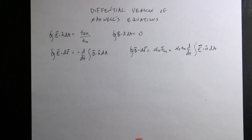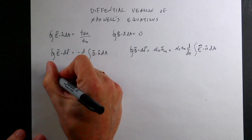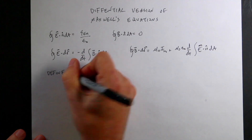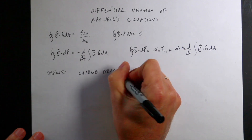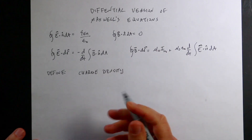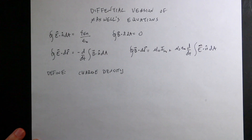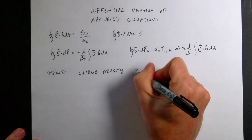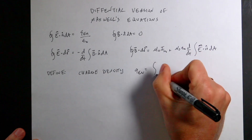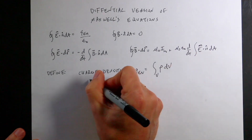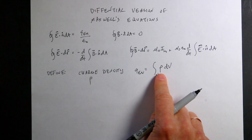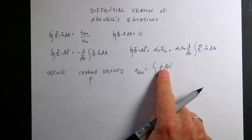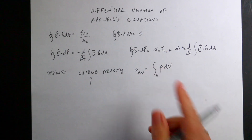Now we're going to define two things. Number one is the charge density, rho — the charge per unit volume. The total charge enclosed in some volume is Q-enclosed equals the integral over that volume of rho dV. So if you know the charge density function and integrate over the volume, you get the total charge. If the charge density is constant, you can pull it out and get charge times volume, but it doesn't have to be constant.